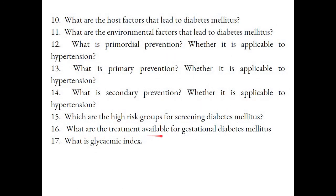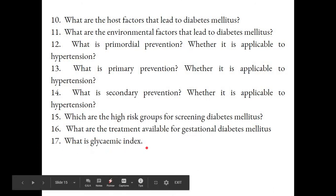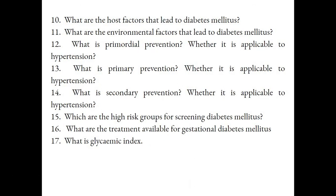What is the treatment available for gestational diabetes mellitus? Insulin is the treatment — oral hypoglycemic agents are contraindicated in gestational diabetes mellitus. What is glycemic index? Glycemic index is the ability of a food material to rapidly raise blood sugar, irrespective of its calorie content. For example, potato has fewer calories but a high glycemic index, while rice and wheat have higher calories but a lower glycemic index.